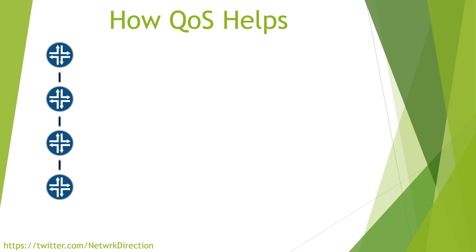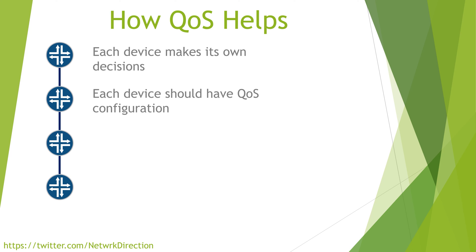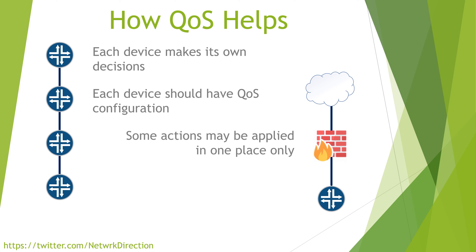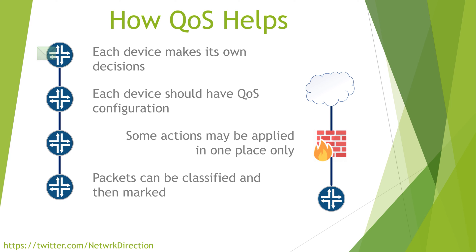It is critical to understand that each device makes its own QoS decisions. This means that each device along a path must have QoS configuration to be completely effective. Of course, there may be times that you only want to apply some config in one place — this might include a firewall at the edge of the network that limits the amount of bandwidth allocated to traffic from a particular source. Even though each device is independent, they can still share some information. This is done by marking packets. After we classify traffic as part of a category, the router can put a marking in the header of the packet — like adding a label that tells other devices which category that packet belongs to. This means that other routers in the path can just look at the marking and make a QoS decision based on that.